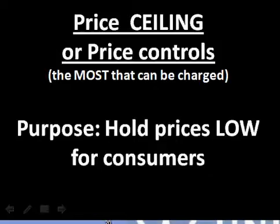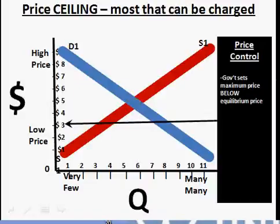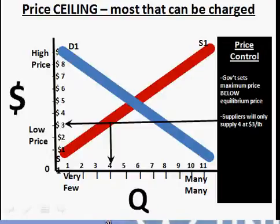Here we're going to be looking at a price ceiling. The idea behind the ceiling is that the price control is there to help the consumer — to provide them with the lowest possible price. That's in contrast to the situation in Part 6, which was designed to help the supplier. So, as always, we start at equilibrium, and now the government sets a price control below the equilibrium level.